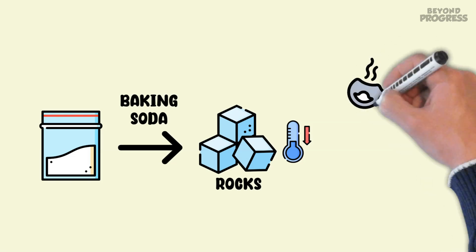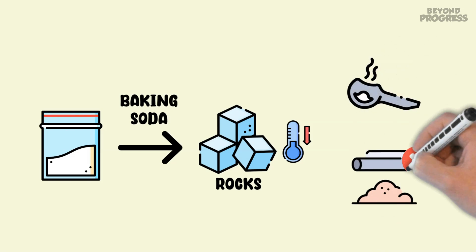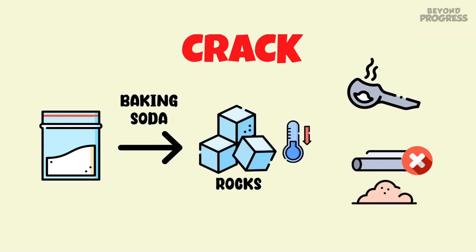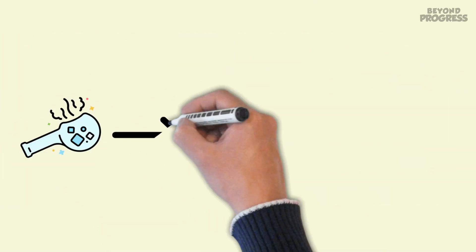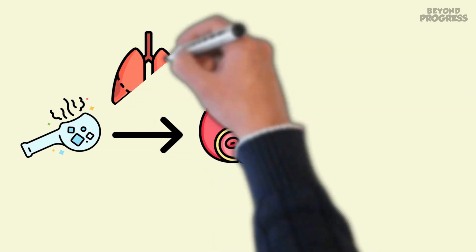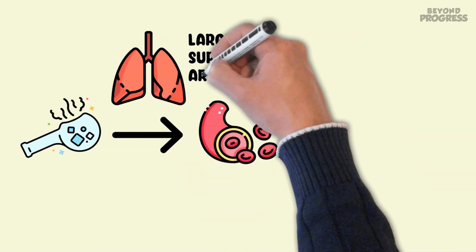The name crack originates from the cracking sound it makes when heated. Smoking crack delivers the drug rapidly into the bloodstream via the lungs, which have a large surface area ideal for quick absorption.